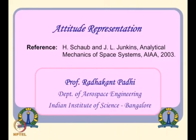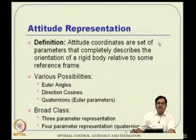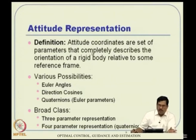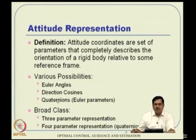Before finishing this class, let us take a look at various attitude representations. This entire 6DOF was derived in terms of Euler angles, but there is a strong drawback. These problems are further amplified in satellite control — where the satellite can tumble through full 360-degree rotations — and missile dynamics with large angles of rotation. The attitude coordinates are a set of parameters that completely describe the orientation of a rigid body relative to some reference frame. Available representations include Euler angles, direction cosines, quaternions, Rodrigues parameters, and modified Rodrigues parameters — classified into three-parameter and four-parameter representations.